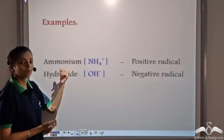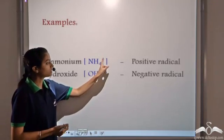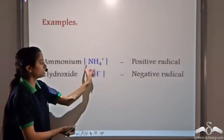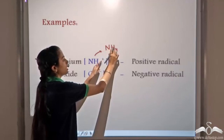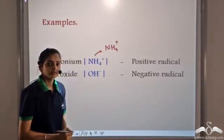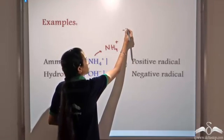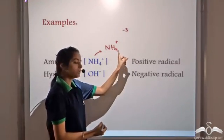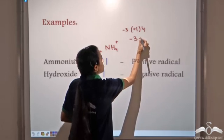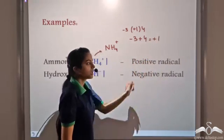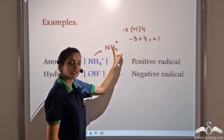Let's see some radicals. The ammonium radical is NH4+ and the hydroxide radical is OH-. This plus charge is for the overall radical — for both nitrogen and hydrogen. How do we get this positive charge? The valency of nitrogen is -3 and the valency of each hydrogen atom is +1. With 4 hydrogen atoms, we get -3 + 4 = +1. So this +1 is the overall charge for the ammonium radical.